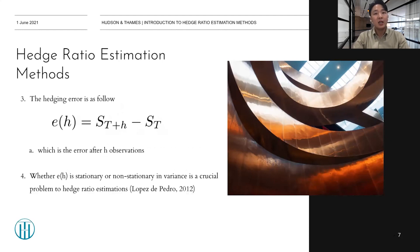And the hedging error is as follows. EH equals ST plus H minus ST, which is the error after H observations. So whether EH, this hedging error, is stationary or non-stationary in variance is a crucial problem to hedge ratio estimations. Usually, portfolio managers fear the case that EH is non-stationary in variance because in that scenario, the hedging error is unbounded. And a special case of non-stationary occurs when EH has a unit root in which situation the hedging errors follow what is commonly known as a random walk.